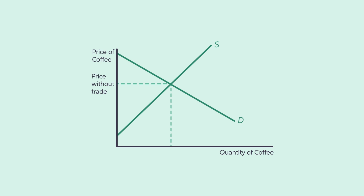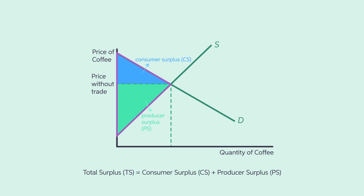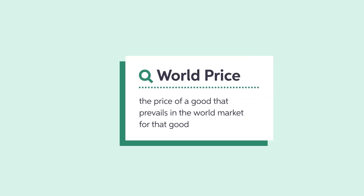To understand the determinants of trade, let's examine a country's equilibrium outcome without international trade. Take, for example, a coffee market with only domestic buyers and sellers, where the equilibrium outcome is based on the domestic market only. The consumer surplus CS and producer surplus PS without trade are shown by the green and blue shaded areas in the figure. The total surplus TS in the market is the sum of CS and PS. Understanding the domestic price and world price of a good is key to interpreting trade outcomes.